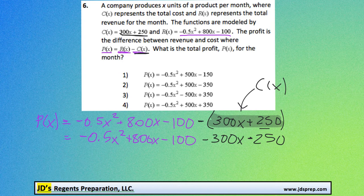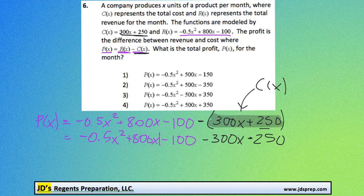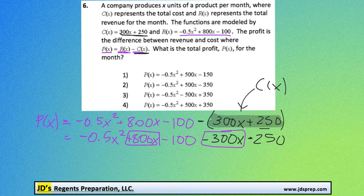Now we can start combining our like terms together. We've got an 800x minus 300x.